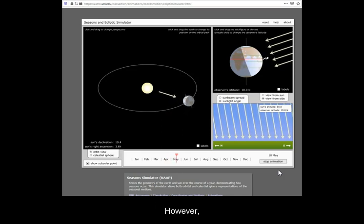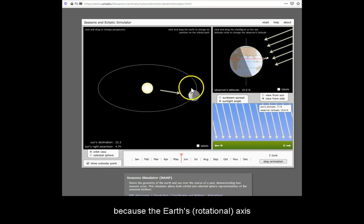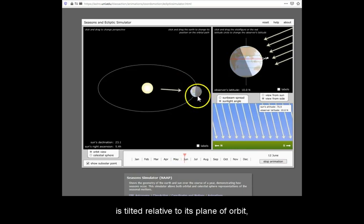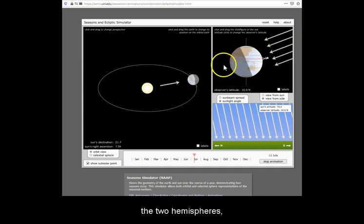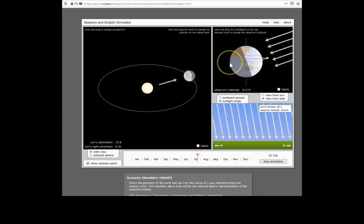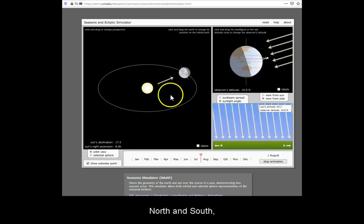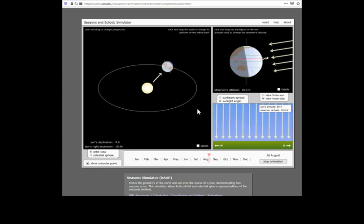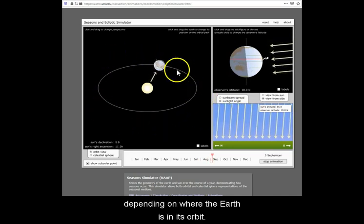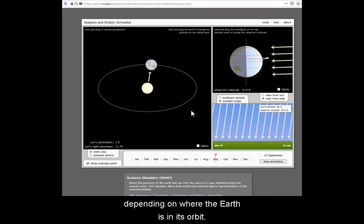However, because the Earth's axis is tilted relative to its plane of orbit, the two hemispheres, north and south, don't get equal amounts of lighting depending on where the Earth is in its orbit.